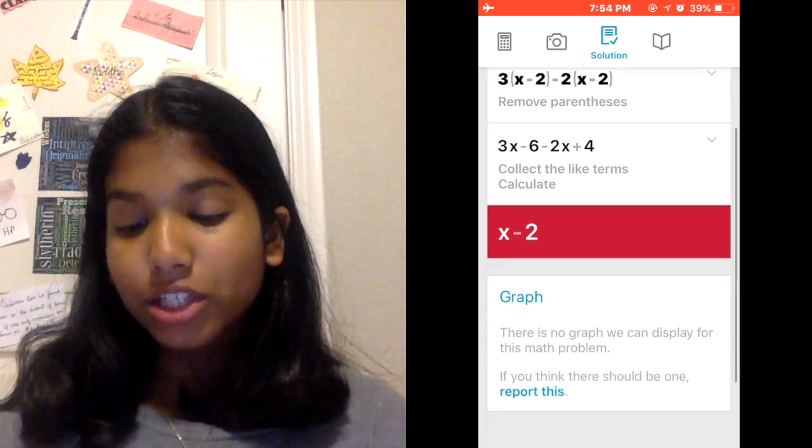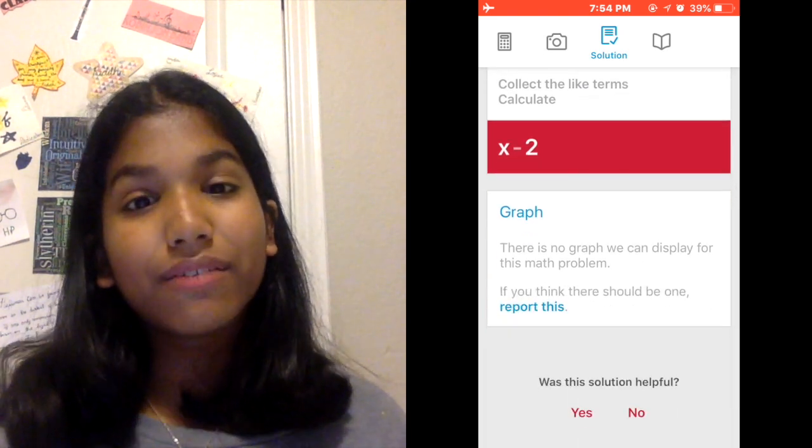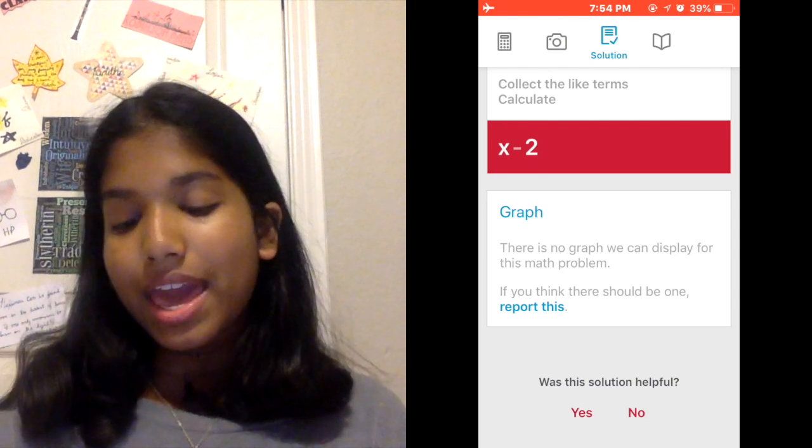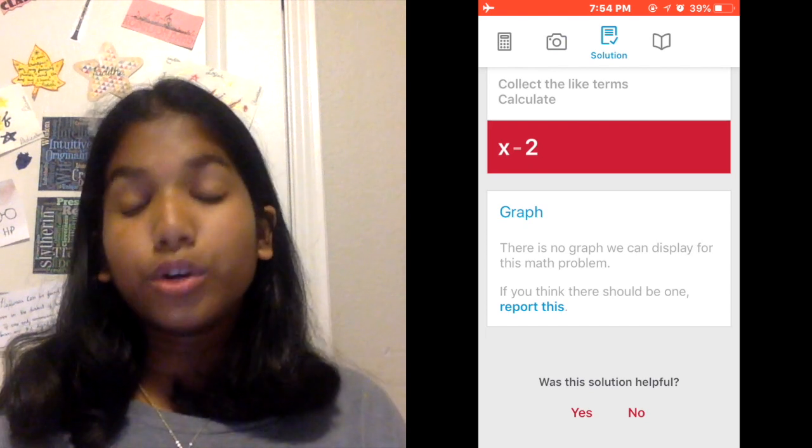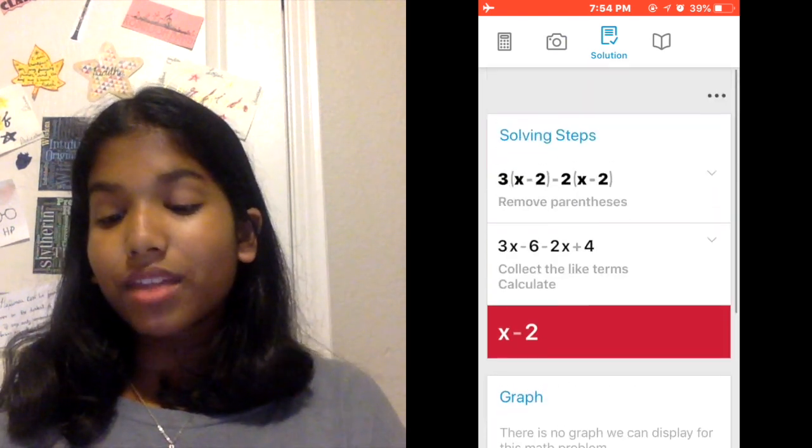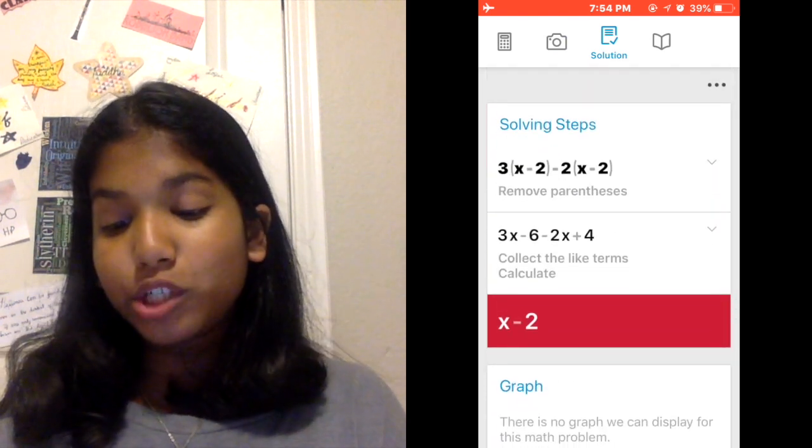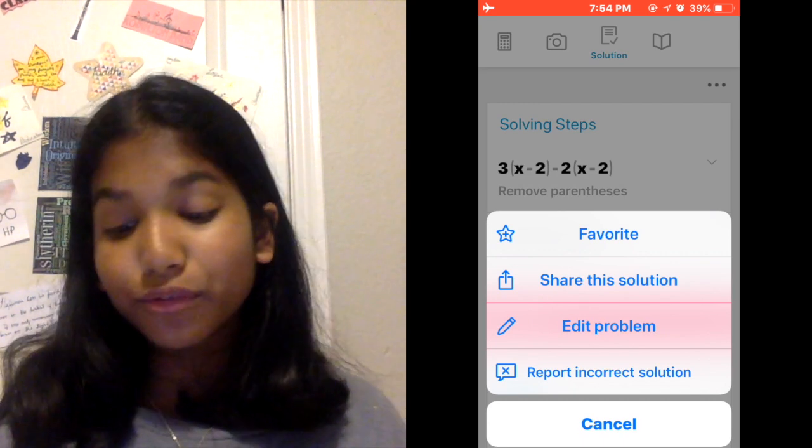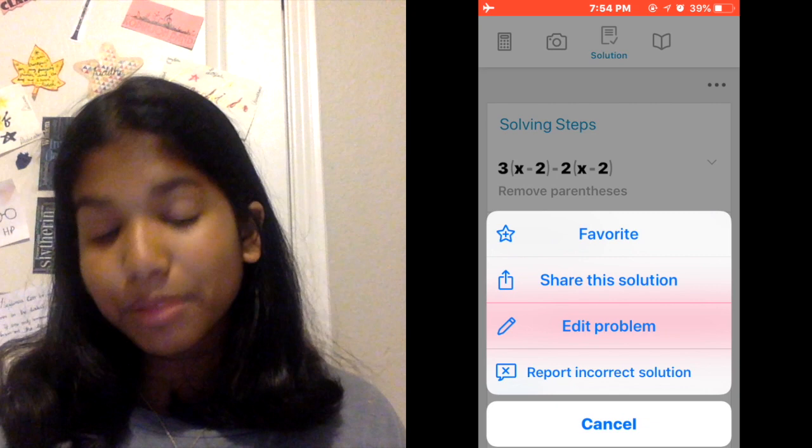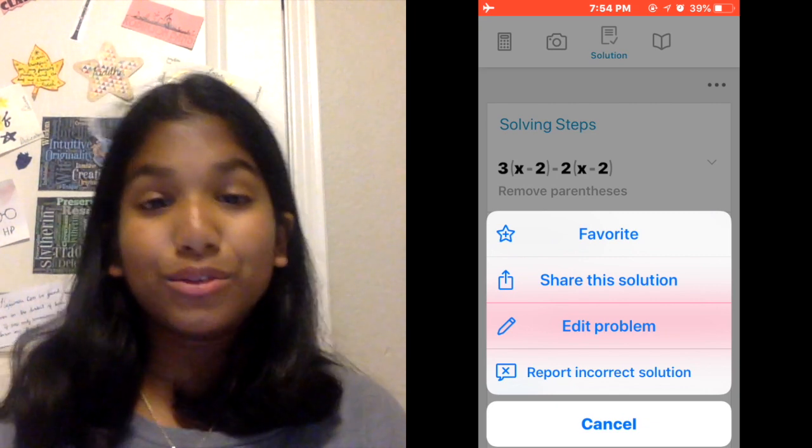You can actually see if there is a graph for that kind of problem, and if that is a graphable problem, it will give you the graph for that problem. There are three dots on the right, which you can use to favorite that problem, share the solution with your friends, you can edit the problem, and you can report an incorrect solution.